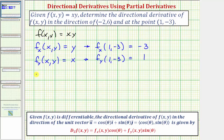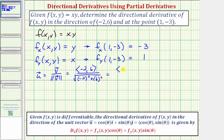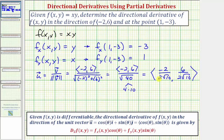We're given the directional vector v with components negative two, six. We need the unit vector in the same direction, which equals vector v divided by the magnitude of vector v. So we have negative two, six divided by the square root of (-2)² plus 6², which is the square root of 4 plus 36, or the square root of 40. This simplifies since 40 equals 4 times 10 and the square root of 4 is 2, giving us negative two over 2√10, six over 2√10.